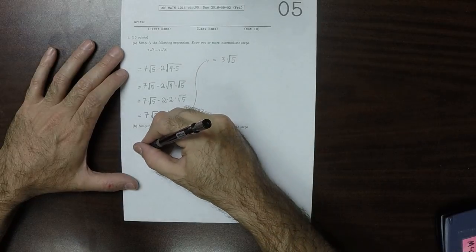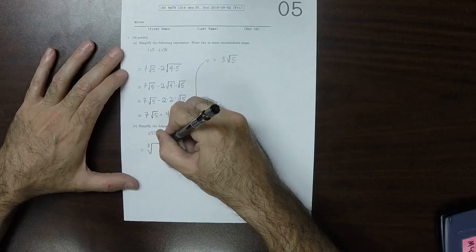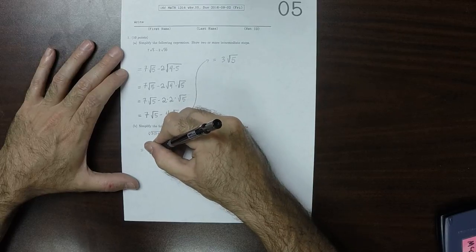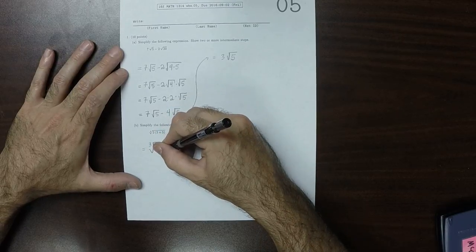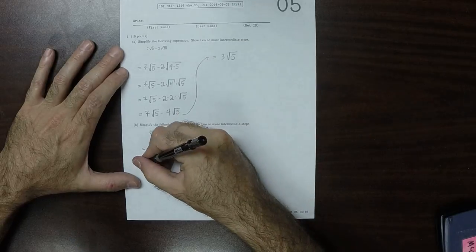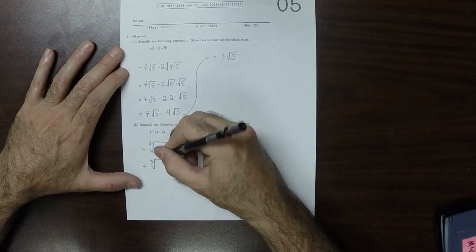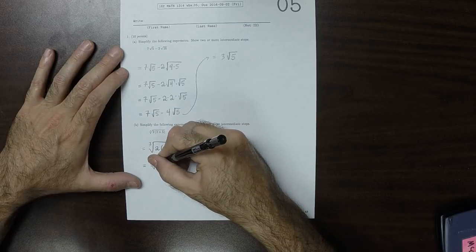Part B. This would be cube root of 2 times 8, which is cube root of 16.